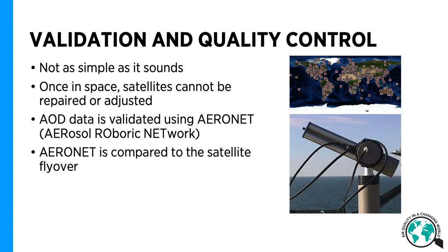So how do we validate and quality control this remote sensing data? It's not as simple as it sounds and can actually be quite tricky. Satellite sensors are tested rigorously on the ground before launch, but once they're in space, physical contact and maintenance with the sensor is not possible — this includes repairs, adjustments, and calibrations. AOD data is validated using AERONET, which stands for the Aerosol Robotic Network. AERONET consists of sensors at stations all around the world, shown in the map in the upper right corner. It works by pointing a sensor at the sun and measuring the intensity of the sun that reaches the sensor through the atmosphere. This AERONET data is then compared to data from the satellites at the same location and time when they fly over.